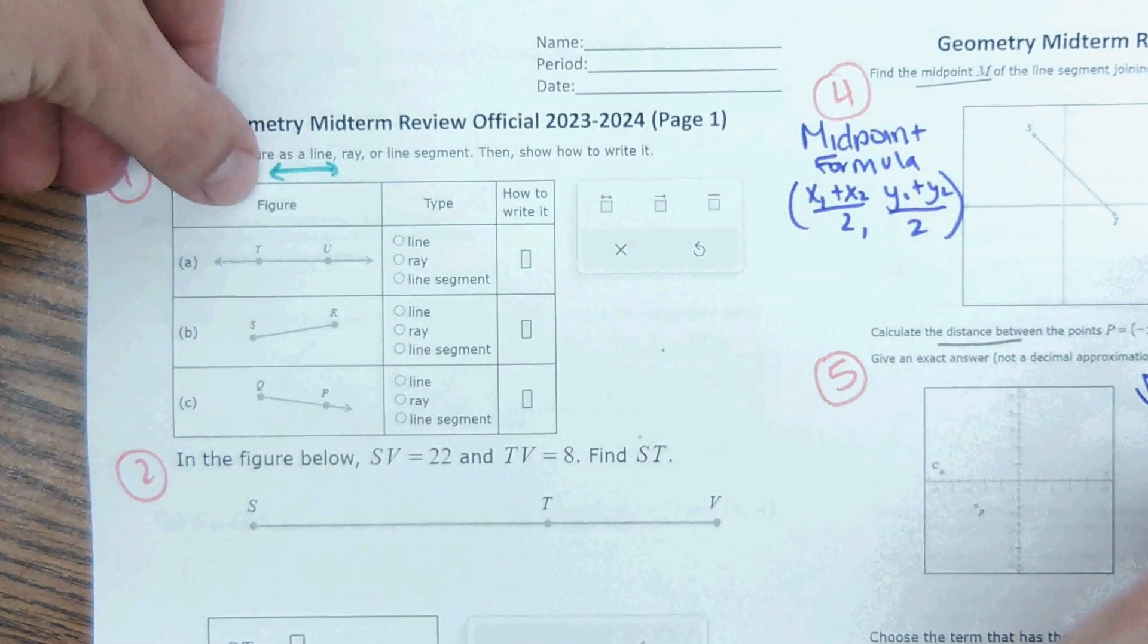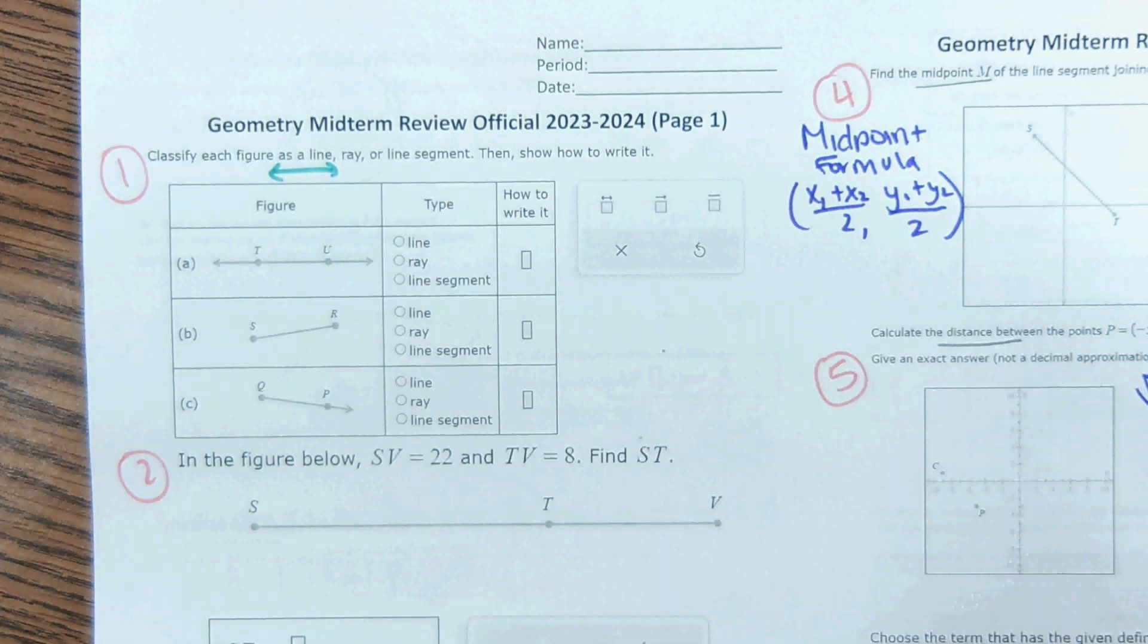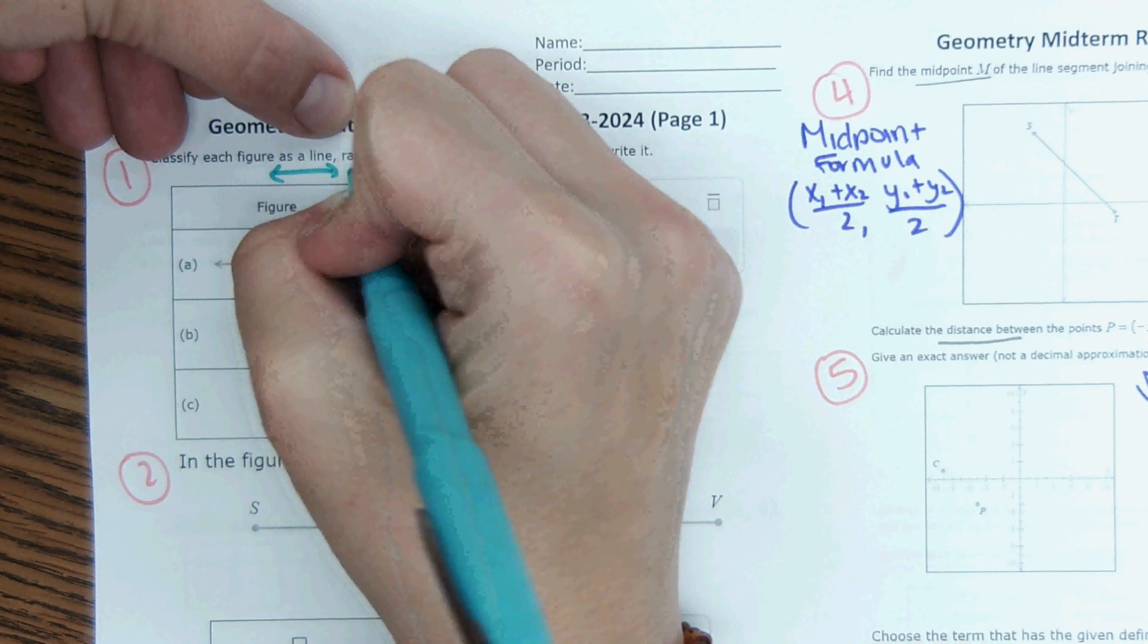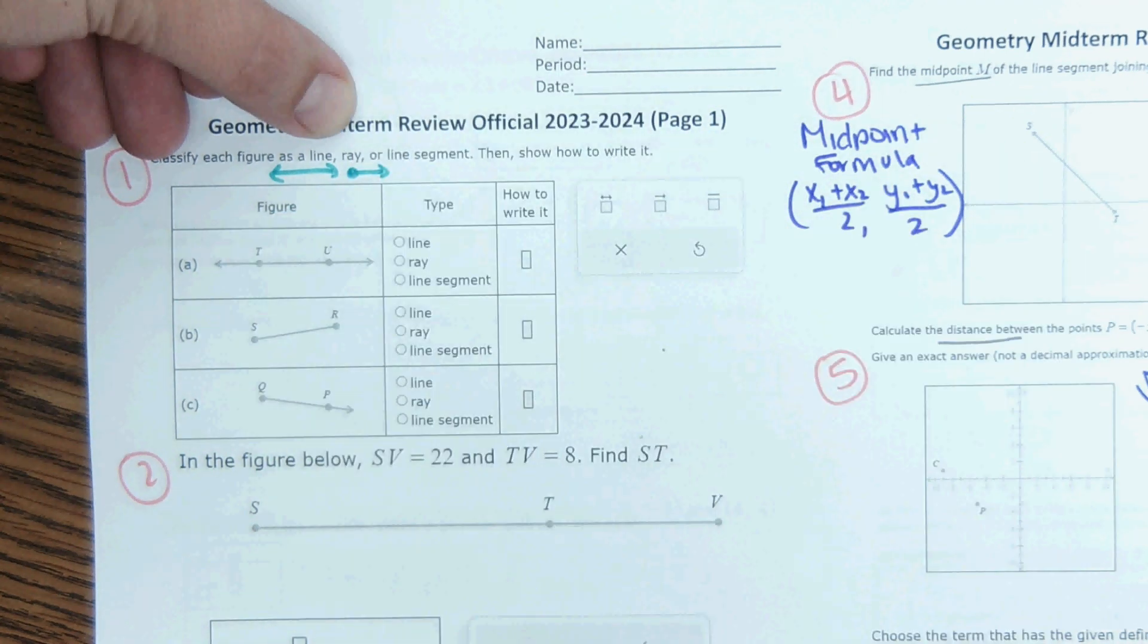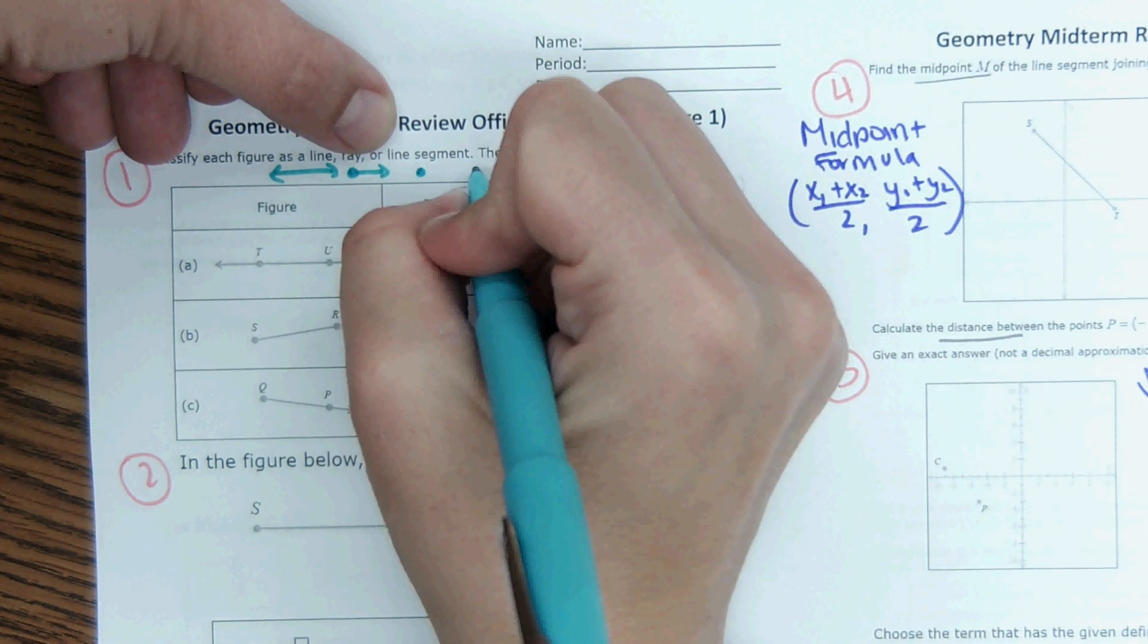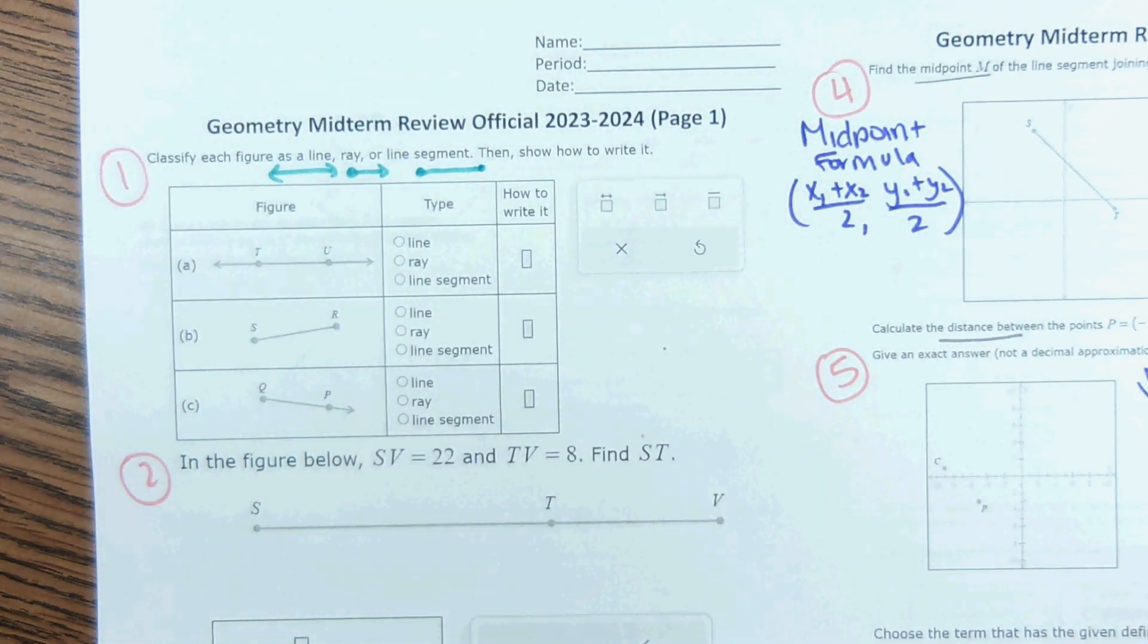So a line looks like this. It goes forever and ever in each direction. Remember, these are also like notes or a study guide. And then a ray has one endpoint and it goes on in one direction. And then a line segment has an endpoint on both sides. And it looks like this.